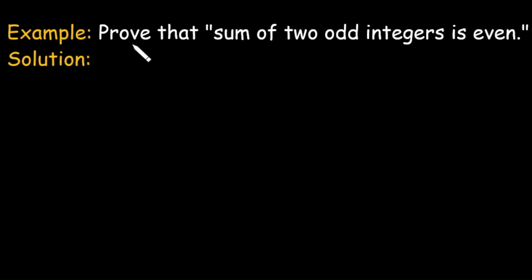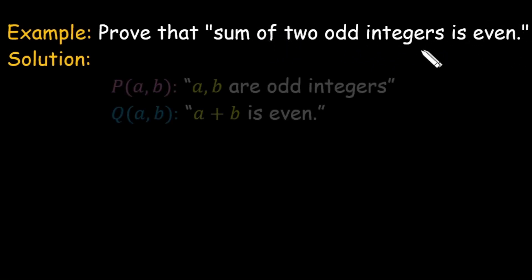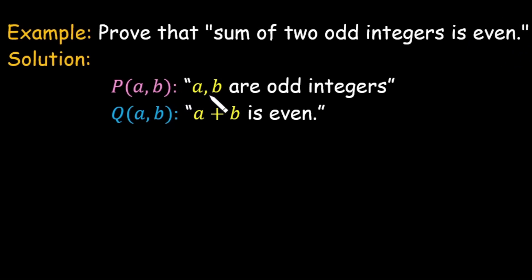For practice, prove that the sum of two odd integers is even. This converts to the conditional statement: if a and b are two odd integers, then a plus b is even. Take hypothesis as a and b are two odd integers, and show that a plus b is even.